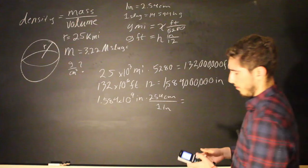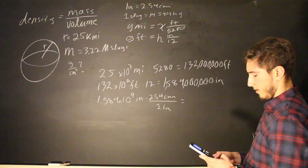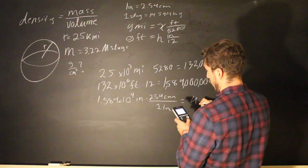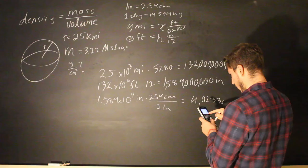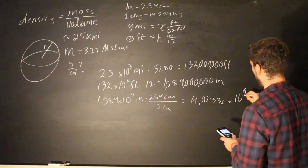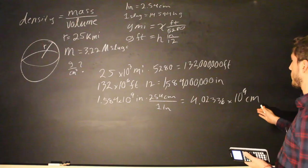We're going to do 1,584 times 10 to the ninth times 2.54. So, we're going to get 4.02336 times 10 to the ninth centimeters. So, now we have the radius in centimeters.